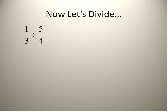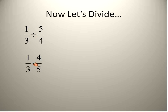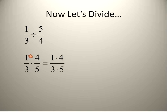Now let's move on to dividing. If we have one-third divided by five-fourths, we would take the reciprocal of the second fraction — so we flip that one over — and then we multiply. The division changes to multiplication, and we flip over the second fraction. We call this multiplying by the reciprocal. Then you just multiply like normal: numerator times numerator, denominator times denominator, and we get our final answer.